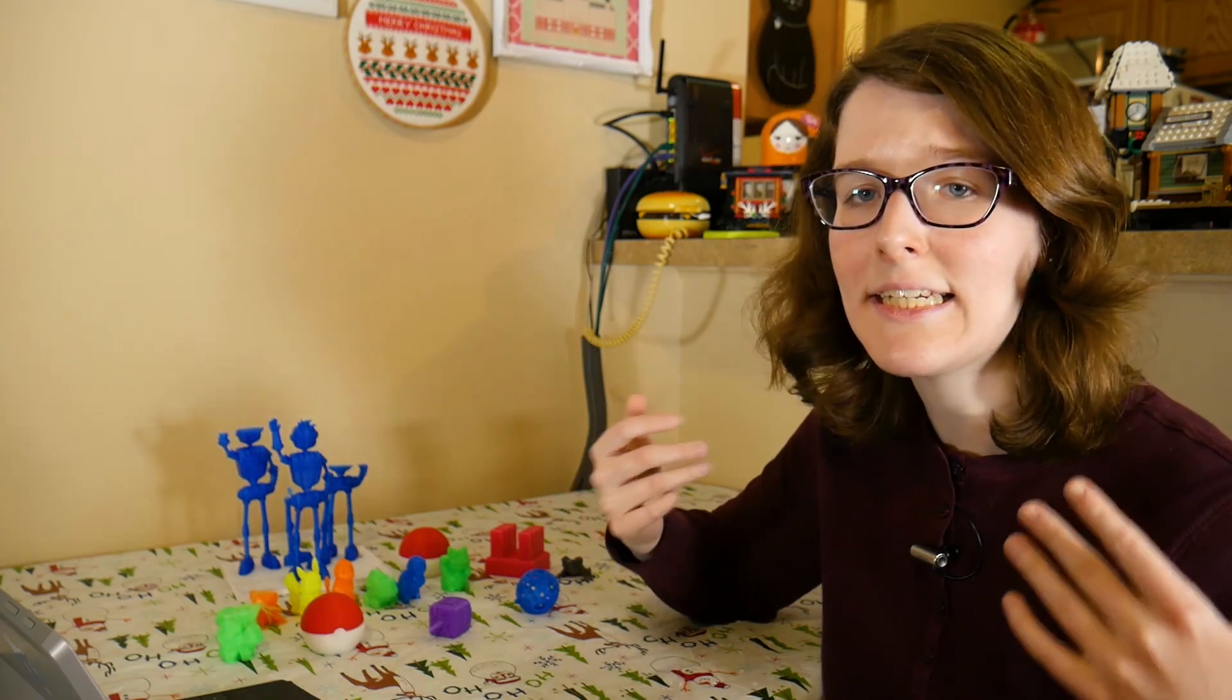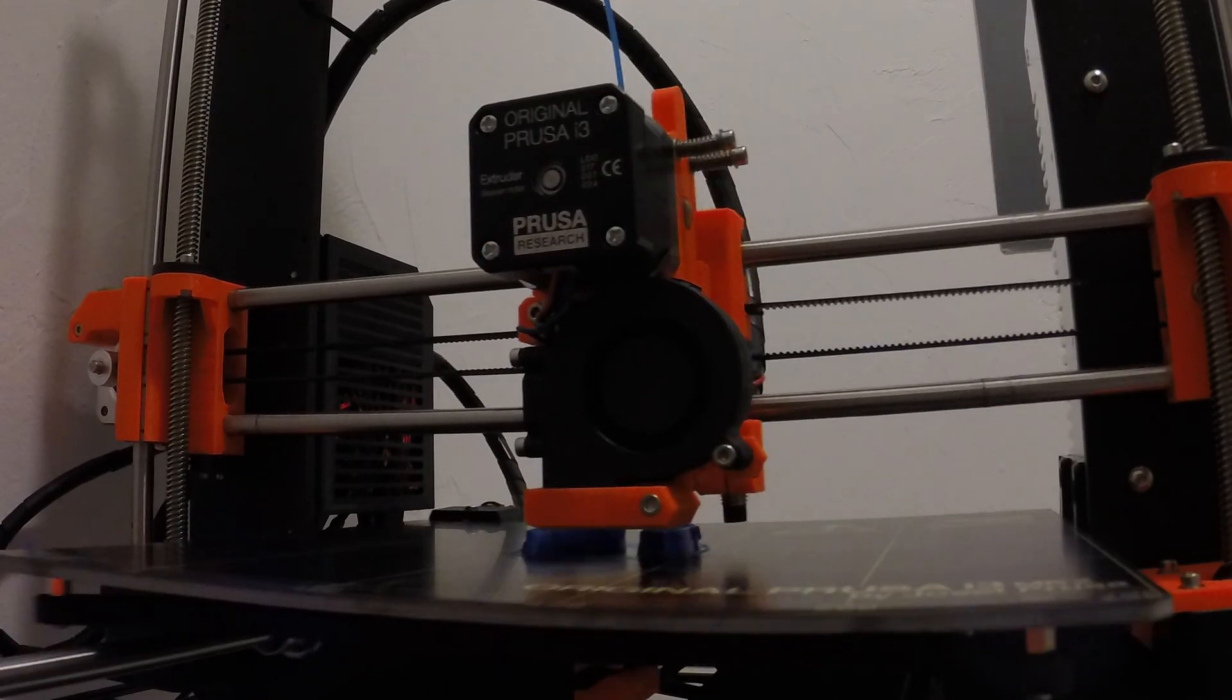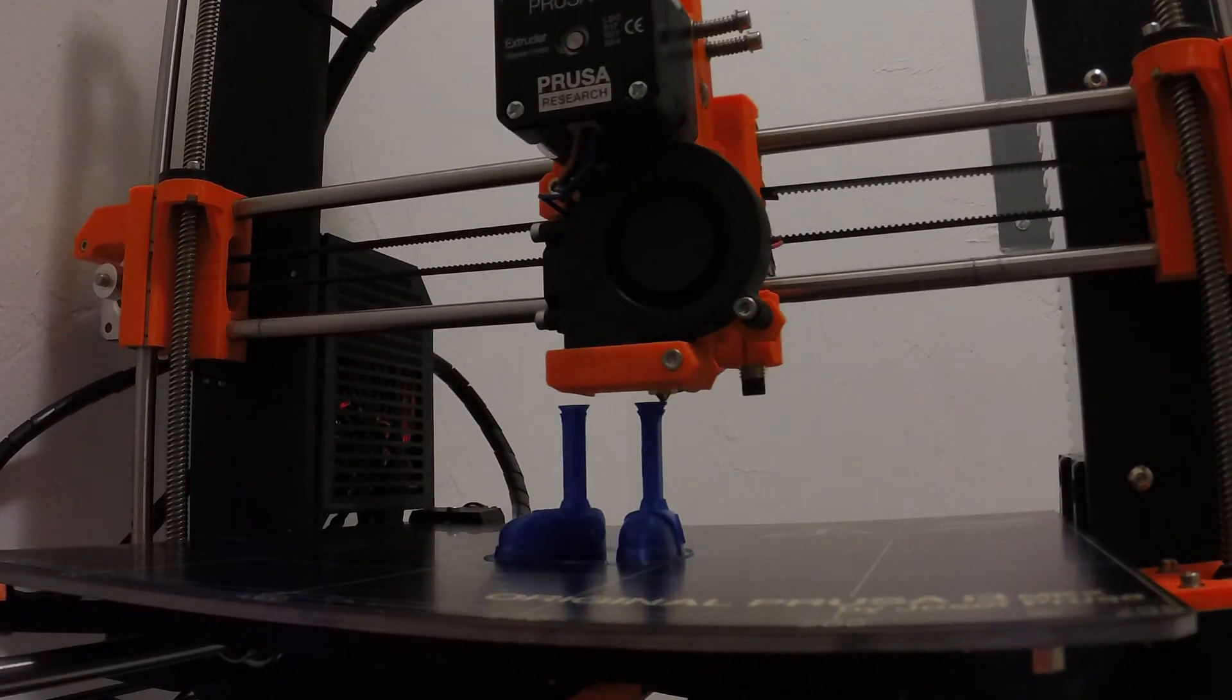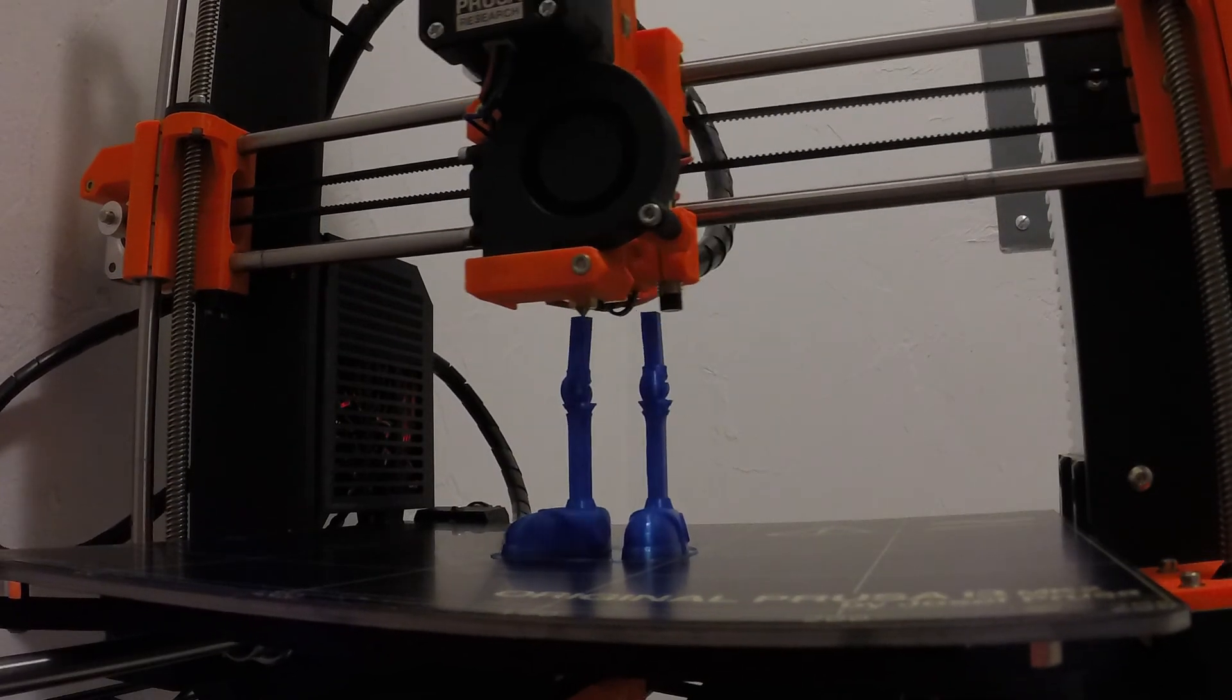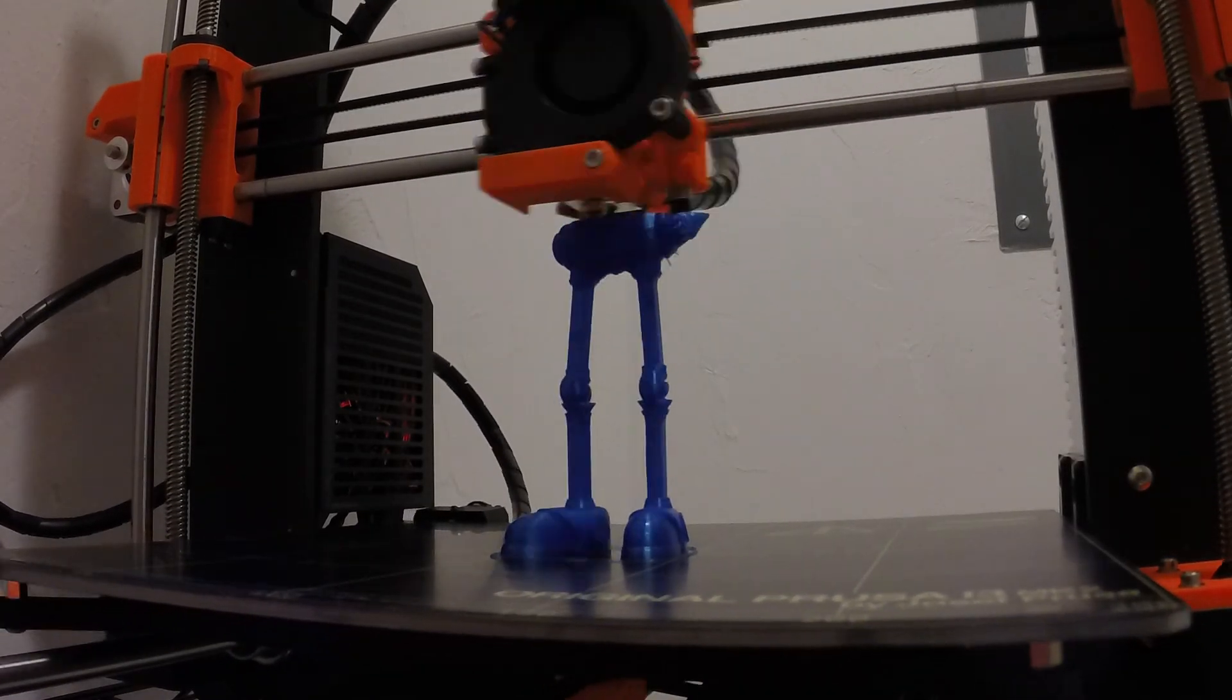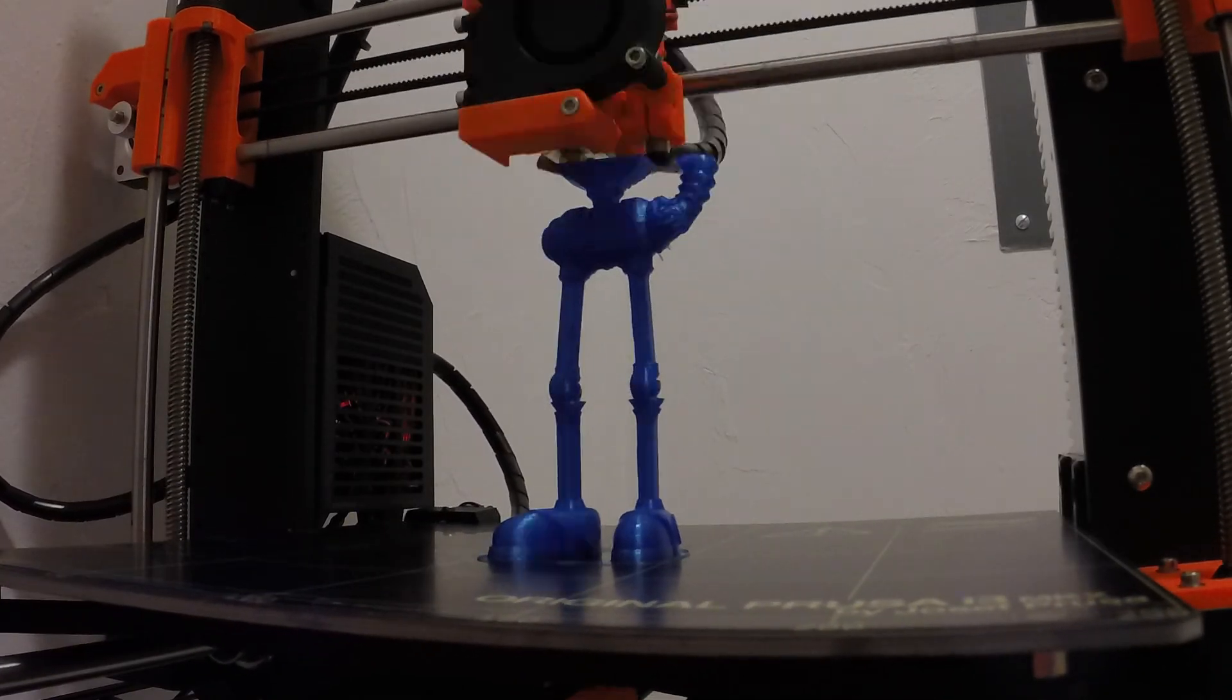And I learn something new about printing every time I print a different kind of model. And it keeps things exciting. And with the Jolbot, oh my gosh. I learned so much with that model. It was such a challenge. It really is a torture test for your printer. You just look at all the detail and everything. And the fact that it's just on the base with these two feet. And it's getting so tall. And there's wobbling and everything like that. It's insane. And as you can see, I had three failed prints.